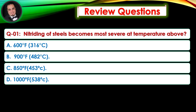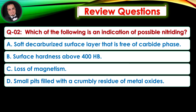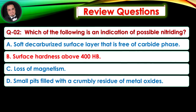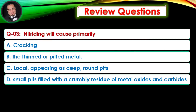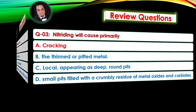Review questions: Question 1 — Nitriding of steels becomes most severe at temperature above? Answer is B. Question 2 — Which of the following is an indication of possible nitriding? Answer is B. Question 3 — Nitriding will cause primarily? Answer is A.